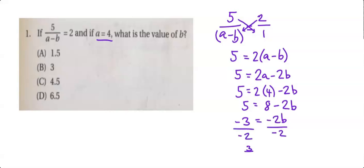This becomes 3 over 2 equals b. And notice the answers are all in decimal so we're going to convert 3 over 2 to a decimal, which is 1.5. So the answer is A, 1.5.